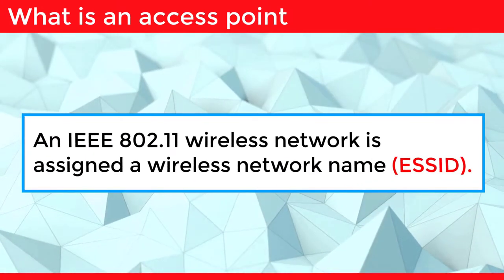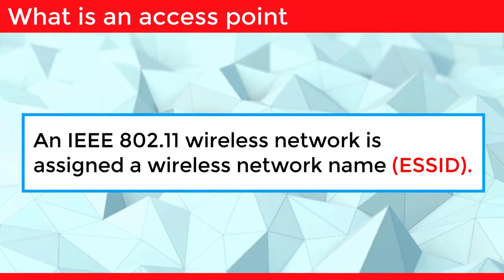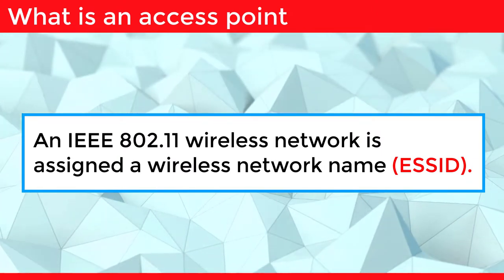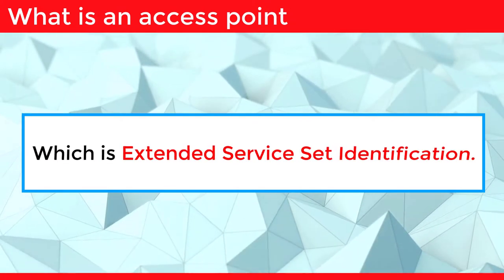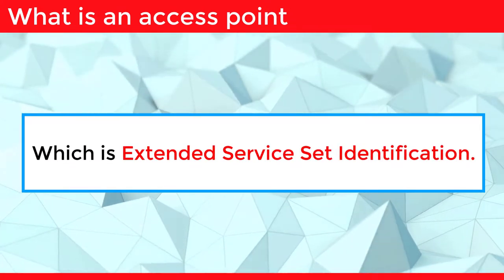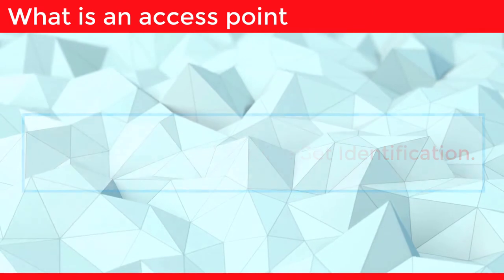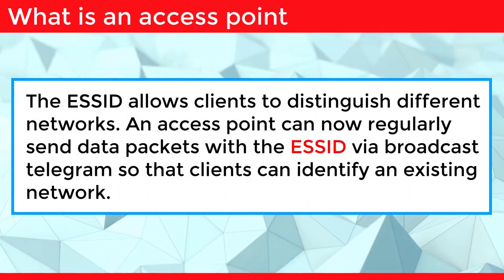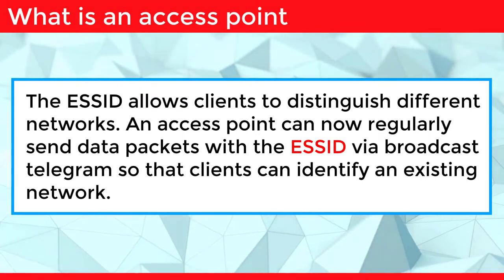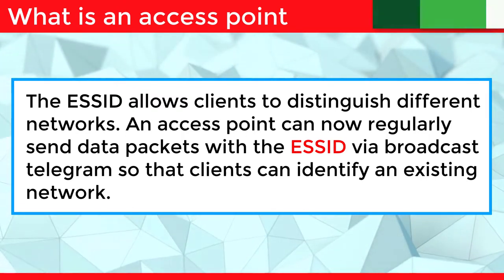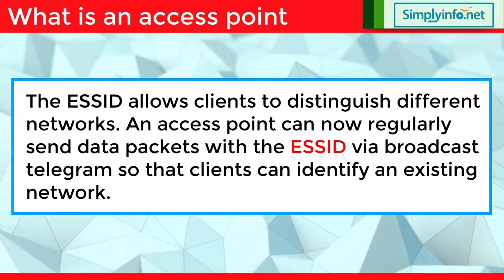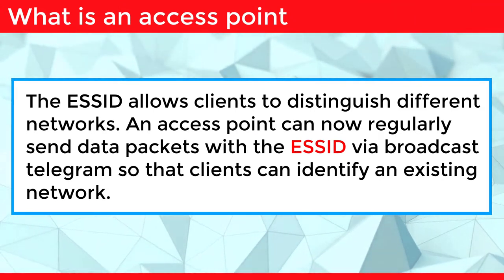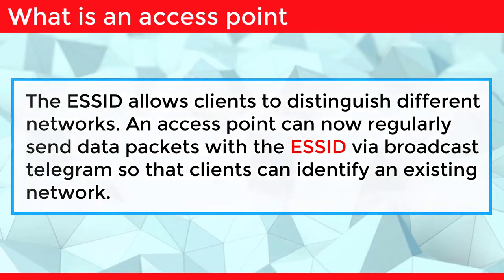An IEEE 802.11 wireless network is assigned a wireless network name called ESSID, which stands for Extended Service Set Identification. The SSID allows clients to distinguish between networks. An access point can regularly send data packets with the ESSID via broadcast telegram so that clients can identify an existing network.